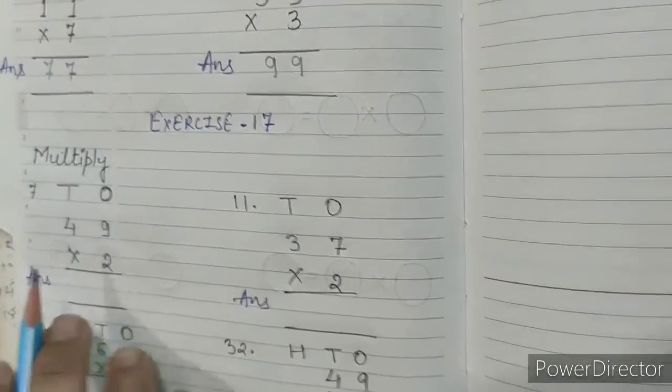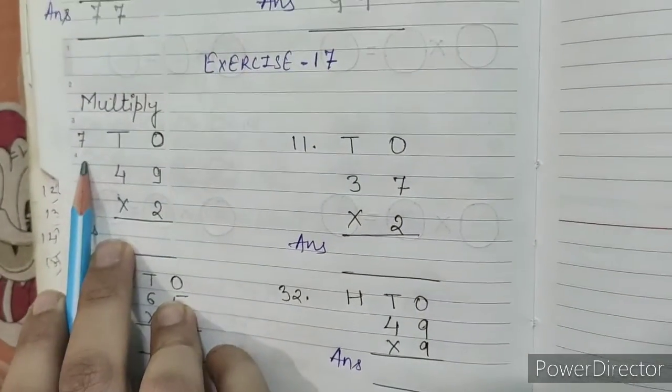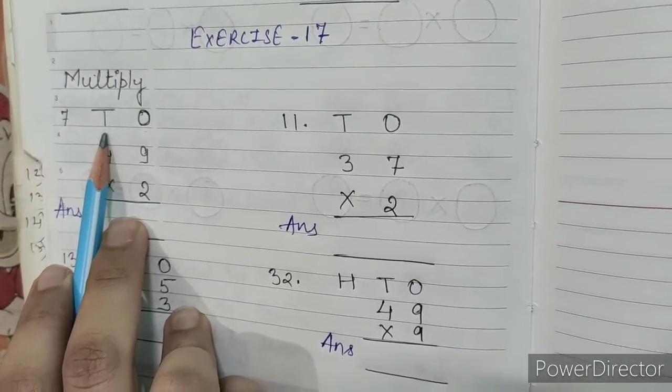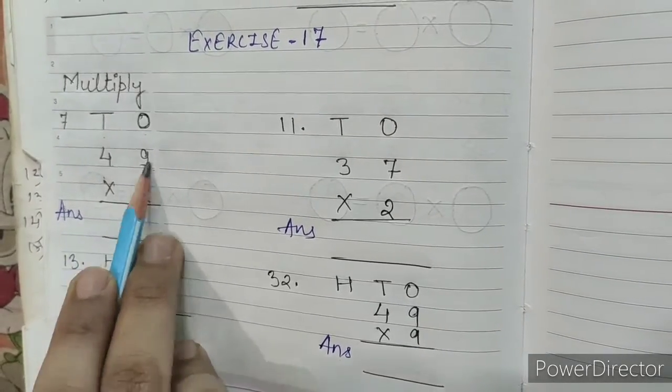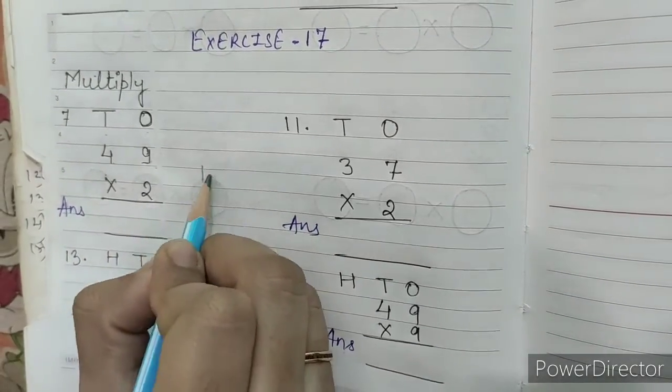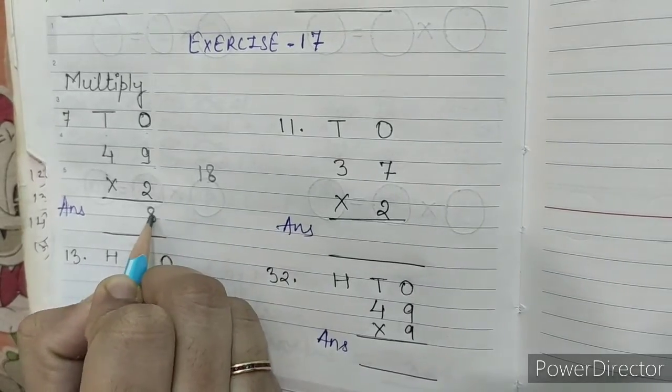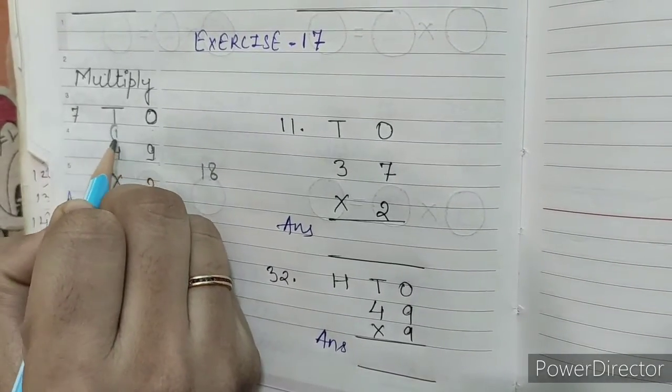Exercise 17, multiply. Question number 7, ones, tens. So, in this question we have to multiply 49 into 2. 2, 9s are 18. So, 1, 8, 18. We will write 8 and we will write 1 here.